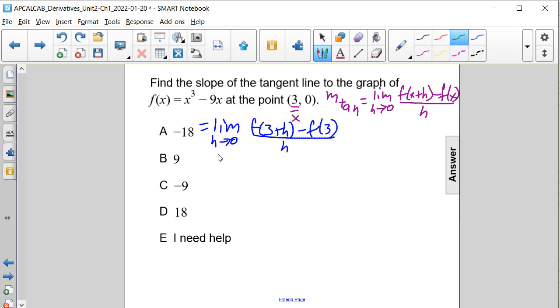And now we're going to substitute in for our x values the expression 3 plus h and then 3. So we're still finding the limit as h approaches 0 of 3 plus h cubed minus 9 times 3 plus h, and then subtract from that 3 to the third minus 9 times 3. This whole thing is going to be divided by h.